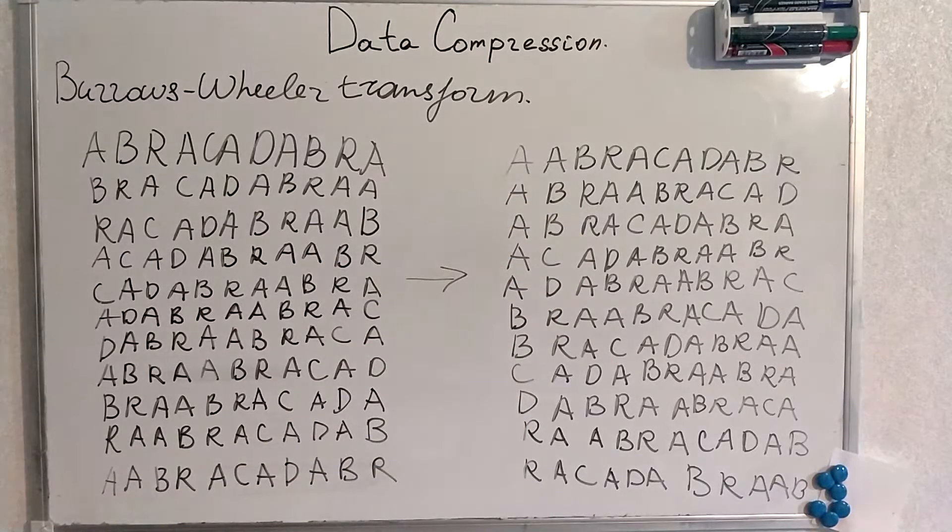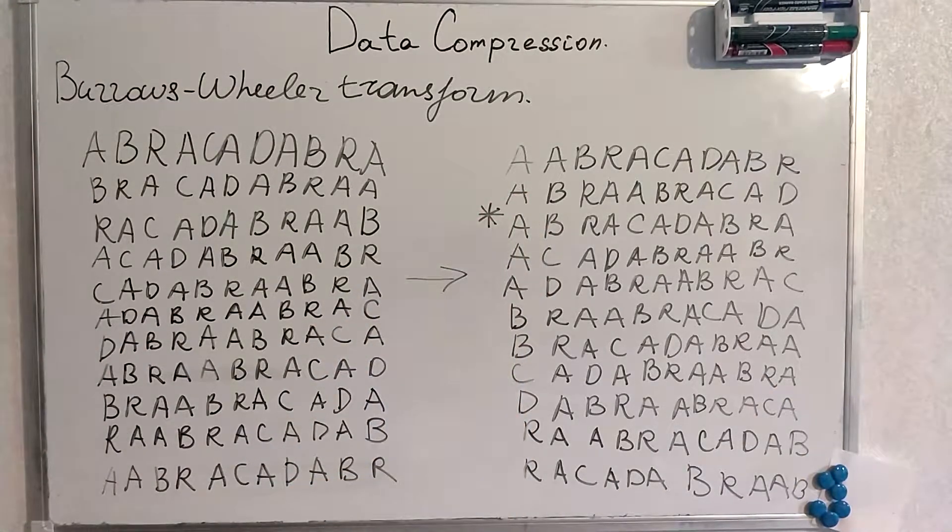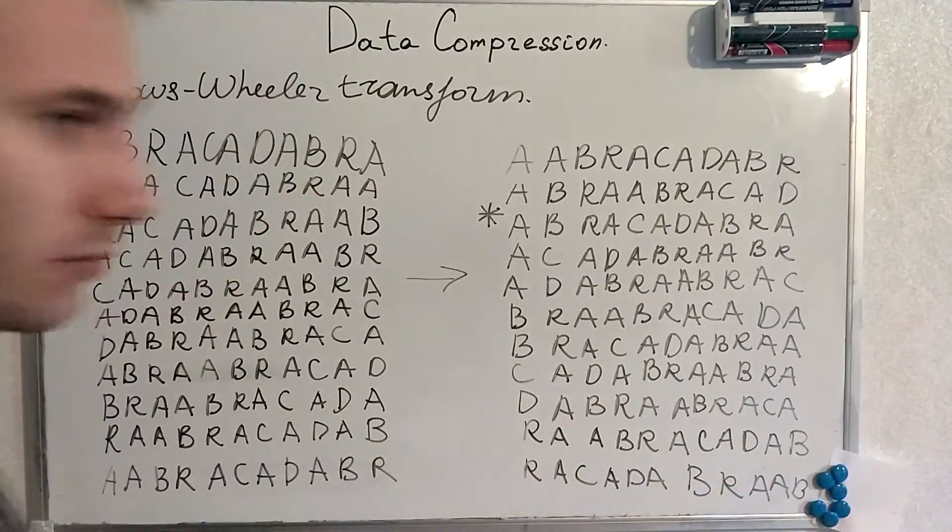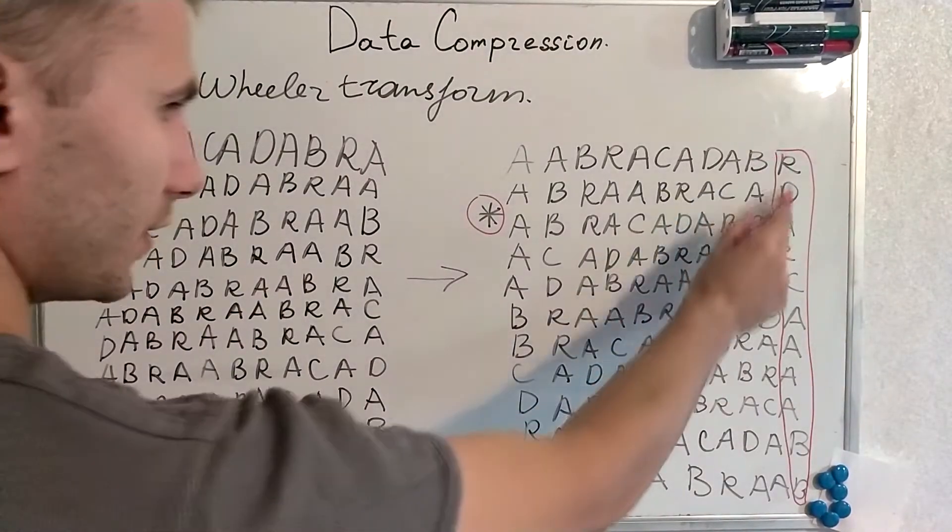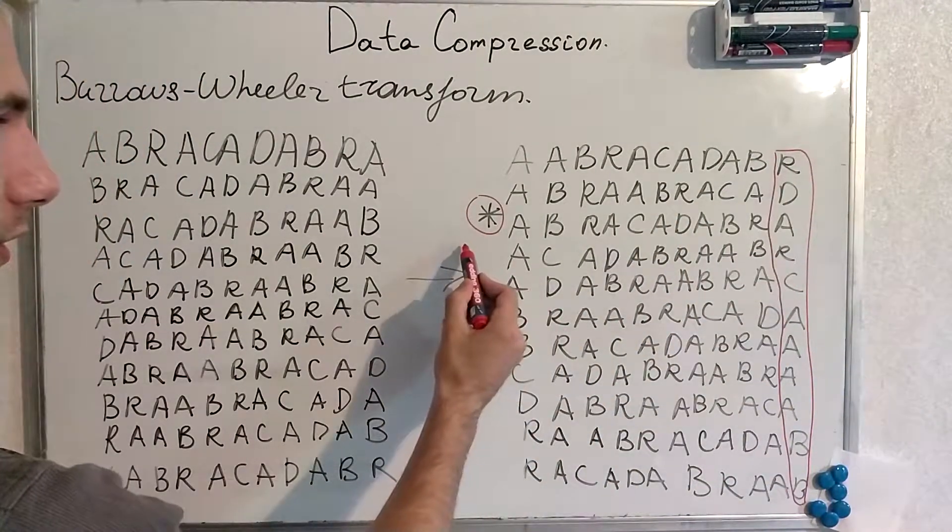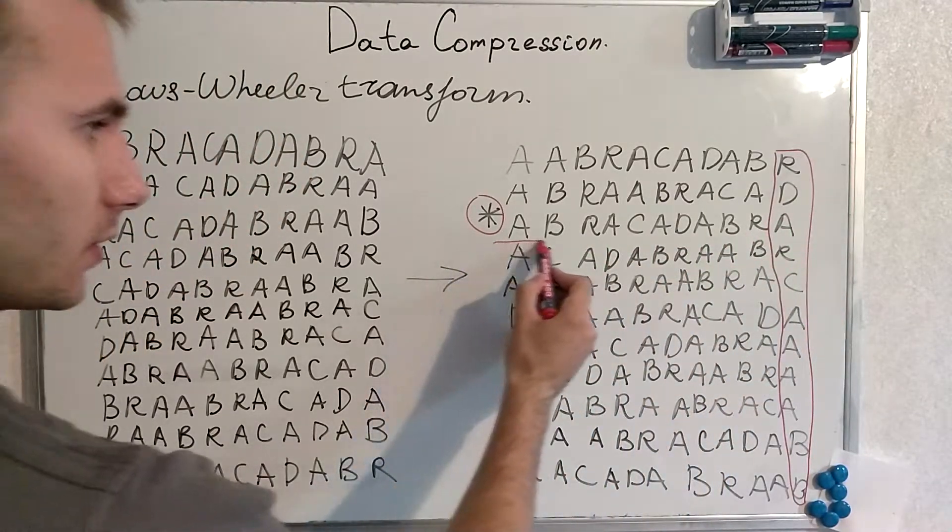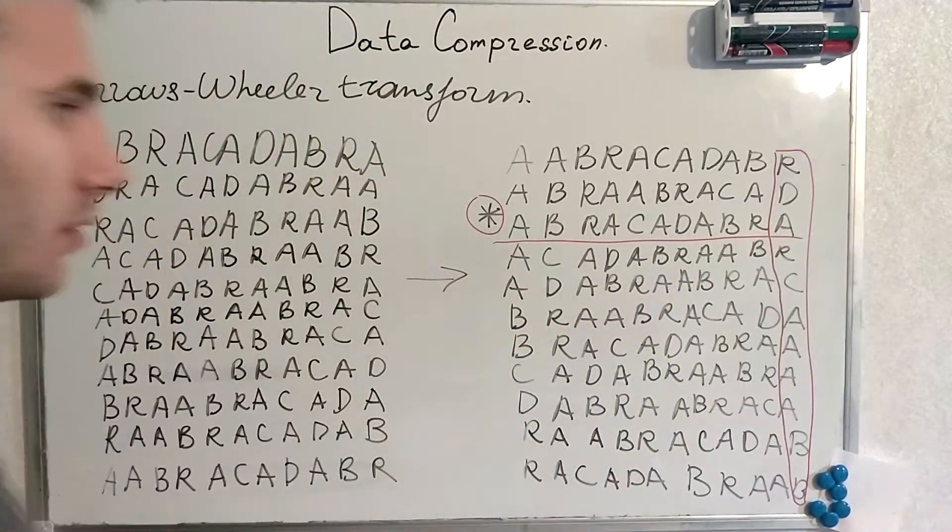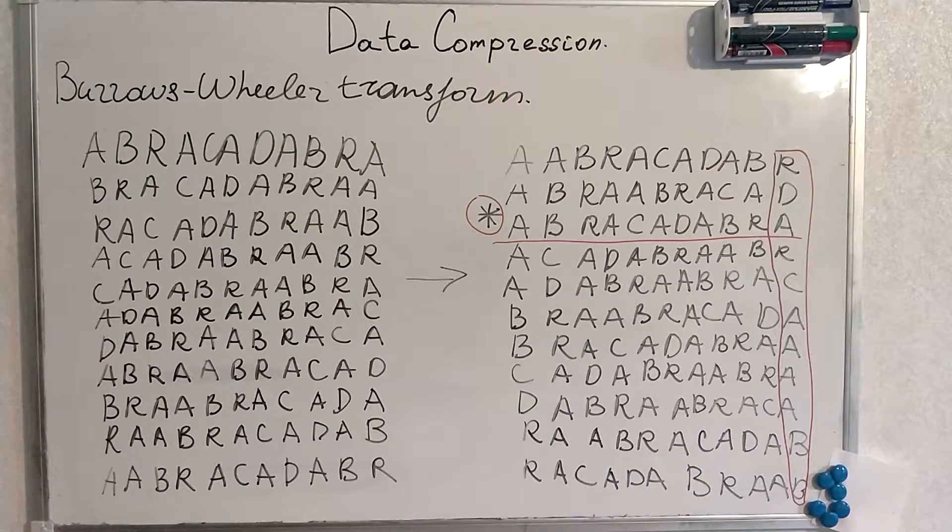What we will actually store is the index of an initial sequence plus the last row. We store this last row and the index of a row that represents our initial sequence. And that's it.